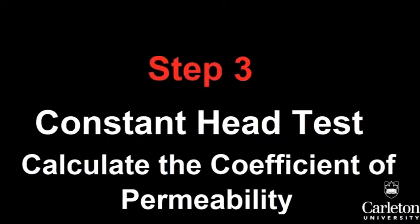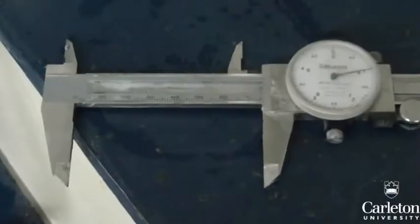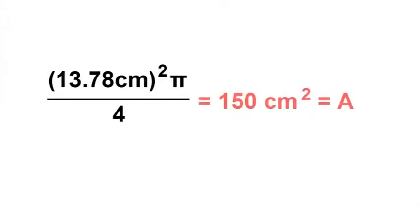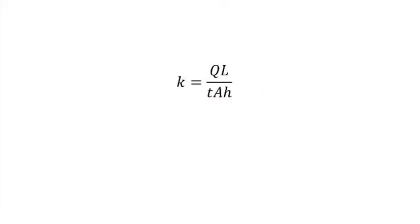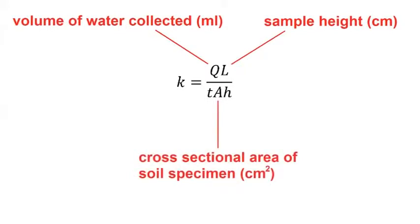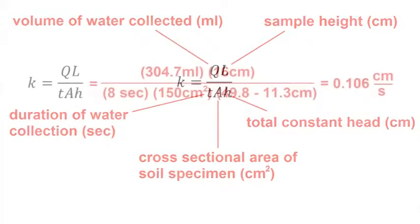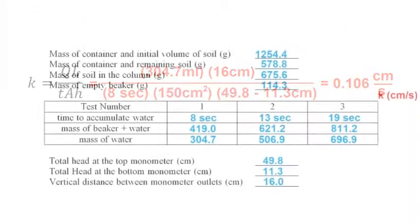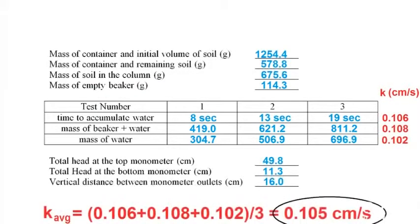We can now clean up the apparatus and proceed to the calculations. Calculate the cross-sectional area of the cylinder by taking calipers and measuring the diameter. The coefficient of permeability for the constant head test is given by: K = (Q × L) / (A × H × T), where Q is the volume of water collected, L is the sample height, A is the cross-sectional area of the soil specimen, H is the total constant head (the difference in head between the two manometers), and T is the duration of water collection. Calculate K for each of your three tests, then calculate the average to get the final value for hydraulic conductivity.